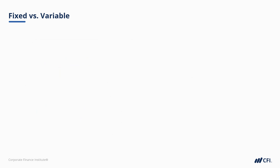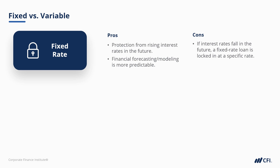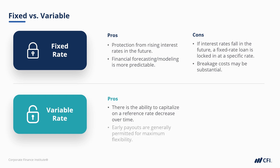So why might a borrower want either type of loan? With a fixed-rate loan, it protects them from rising interest rates in the future, and makes it much easier to plan for future payments when building forecast models. On the flip side, it's worse for the borrower if interest rates fall, and it limits flexibility for early repayment — there are generally steep breakage costs to breaking a fixed-rate loan. With a variable or floating-rate loan, there's the ability to capitalize on a reference-rate decrease, and variable generally permits early payouts, providing maximum flexibility. It's worse for the borrower, though, if the reference rate rises over time.